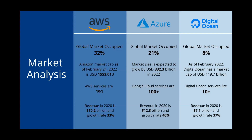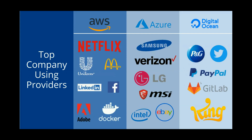In 2020, AWS revenue was $10 billion with a growth rate of 33%. Azure revenue was $12.3 billion with a growth rate of 40%, which is better than AWS. DigitalOcean revenue was $7.1 billion with a growth rate of 37%, which is better than AWS but not better than Azure. AWS holds the worldwide first position overall.